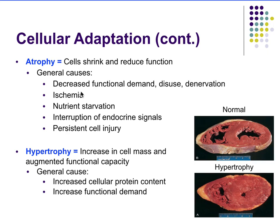General causes of atrophy include decreased functional demand or disuse. Denervation — when the nerve is no longer attached to the muscle — causes atrophy that is actually much more severe than disuse alone. Ischemia, interruption of blood flow, is also a cause. Additional causes include nutrient starvation, interruption of endocrine signals, and persistent cell injury.